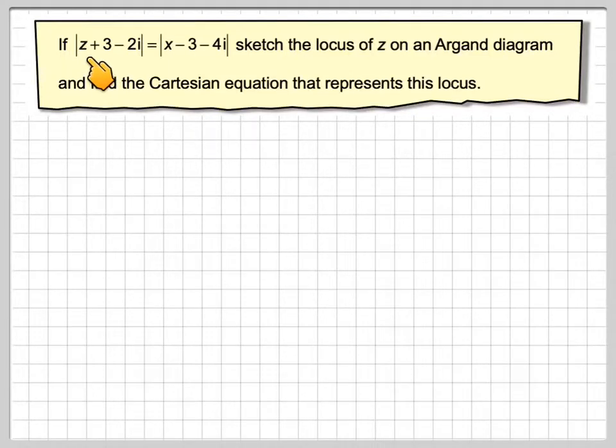If the modulus of z plus 3 minus 2i is equal to the modulus of z minus 3 minus 4i, sketch the locus of z on an Argand diagram and find the Cartesian equation that represents this locus.